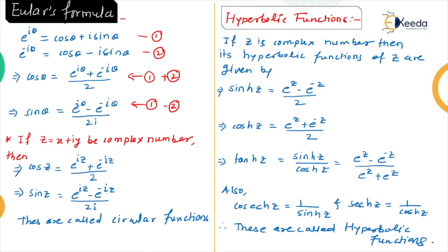We also define tanh z = sinh z / cosh z = (e^z − e^(−z)) / (e^z + e^(−z)). Additionally, cosech z = 1/sinh z and sech z = 1/cosh z, as cosech, sech, and coth are the reciprocals of sinh, cosh, and tanh respectively.